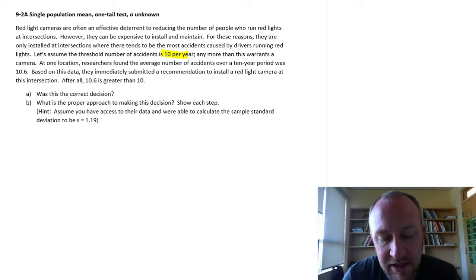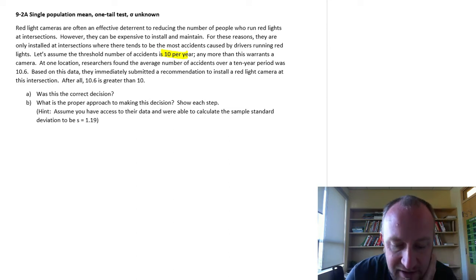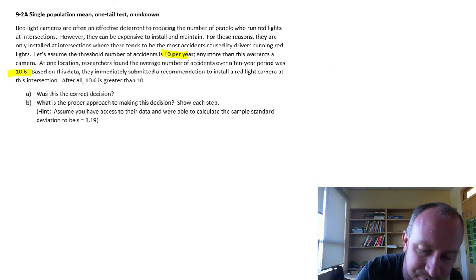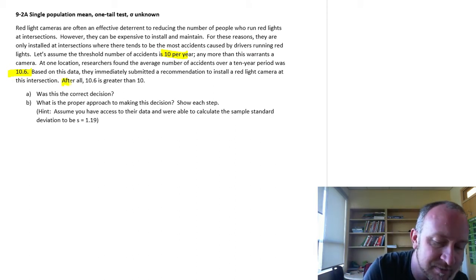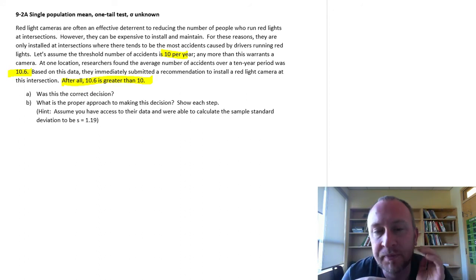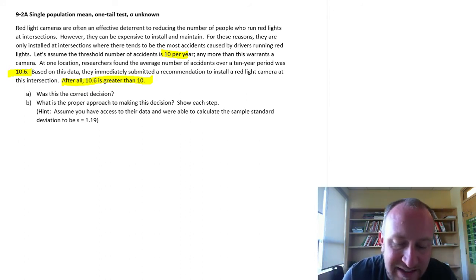So at one location, researchers found the average number of incidents over a 10-year period was 10.6. Based on the data, they immediately submit a recommendation to install a red light camera at this intersection. After all, 10.6 is greater than 10. So the threshold is 10 per year. The 10-year average was 10.6.